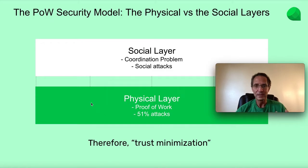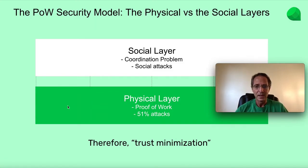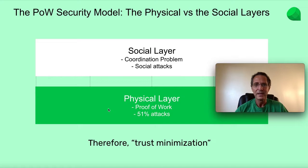At the physical layer, it is a well-known attack vector that in a Proof-of-Work blockchain, if anyone can build or acquire 50% or more of the computing base of a Proof-of-Work blockchain, then they can create a double spend, or 51% attack.